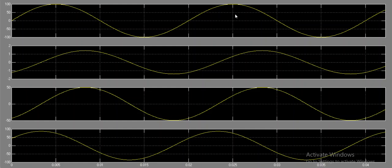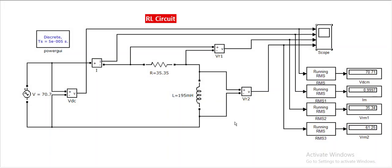This is the total explanation of the waveform of the series RL circuit when AC supply is given. We changed the supply, set the power GUI to discrete, and calculated resistance and inductance values. Since this is AC, we need RMS values — our display block shows only instantaneous values, so we placed RMS blocks to display the correct RMS values.